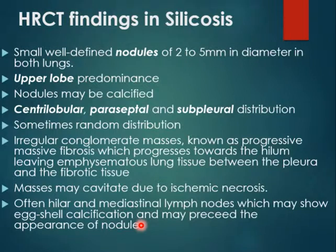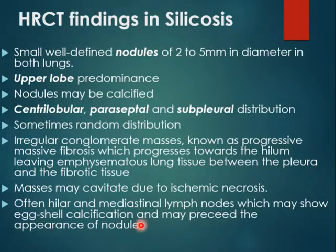In PMF, there is emphysematous lung between the pleural surface and the fibrotic masses. The conglomerate masses are bilateral and upper-zone predominant. PMF may cavitate due to ischemic necrosis, in which case it looks like malignancy — but occupational history is of great help. Hilar and mediastinal lymph nodes may show eggshell calcification, which is characteristic for silicosis and sometimes precedes the appearance of the lung nodules.